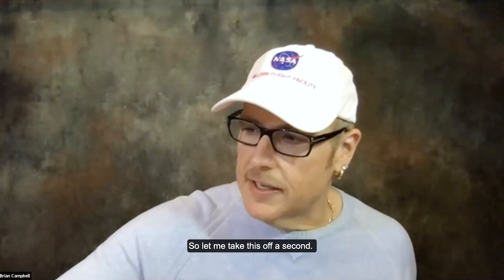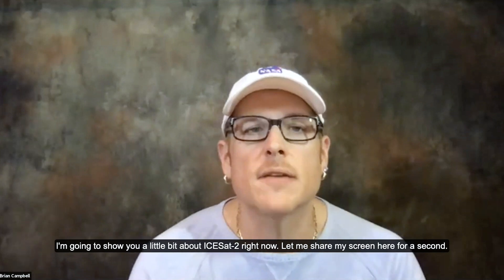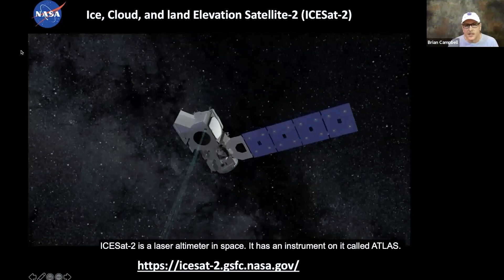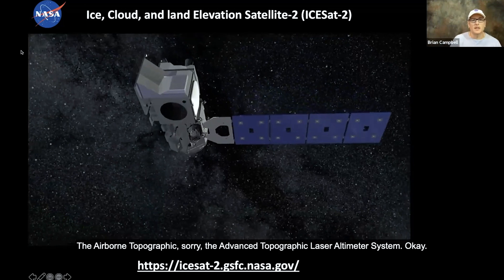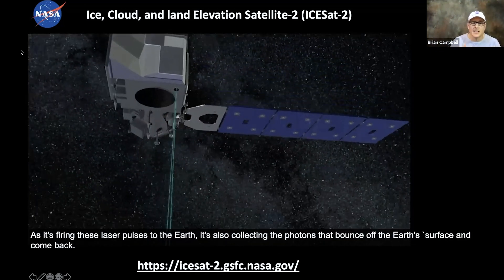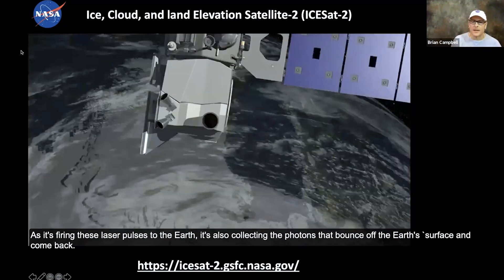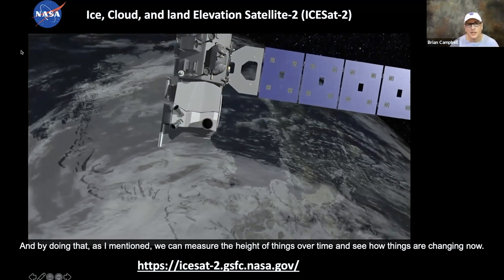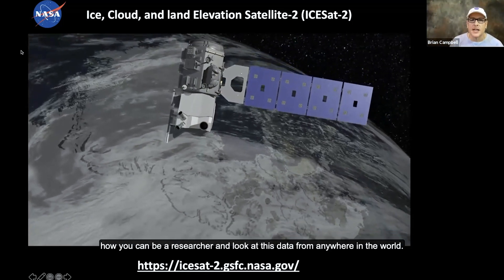ICESat-2 is a laser altimeter in space. It has an instrument on it called ATLAS — the Advanced Topographic Laser Altimeter System. As it's firing these laser pulses to the Earth, it's also collecting the photons that bounce off the Earth's surface and come back. By doing that, we can measure the height of things over time and see how things are changing. What we're going to focus on today are trees and how you can actually look at this data — how you can be a researcher and look at this data from anywhere in the world.